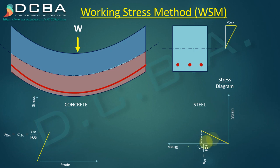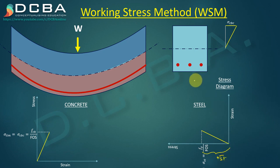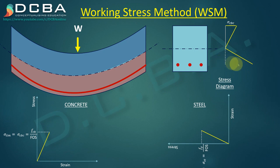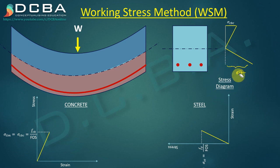We similarly rotate the stress-strain diagram of steel in an anti-clockwise manner. The value Sigma_st should appear at the level of the steel bars, not at the bottom of the cross-section — because this is the stress in steel. Sigma_st must always be shown at the level of the steel. This is a common mistake many students make.